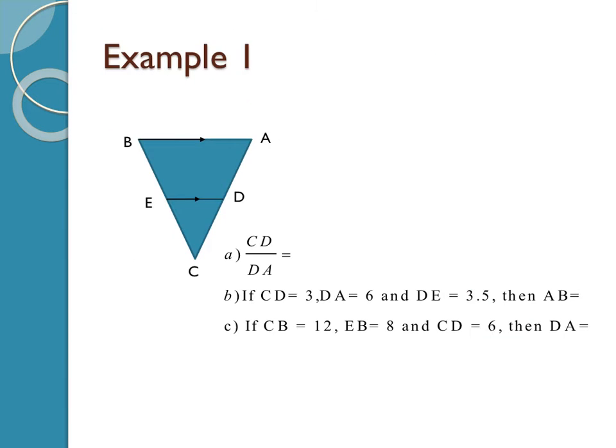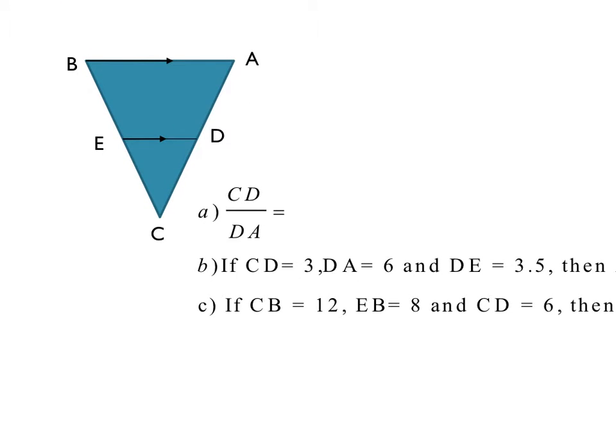Alright, so example one gives you the diagram, and those little arrows are there to show you that they're parallel. So CD over DA would equal what? CE over EB. Good. CE or EC over EB or BE. The order of those letters don't matter.